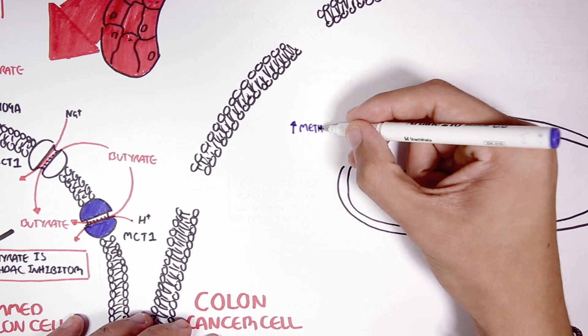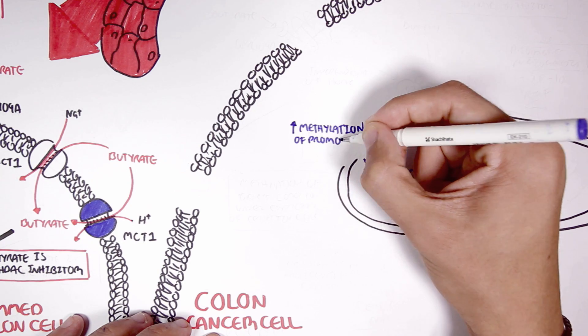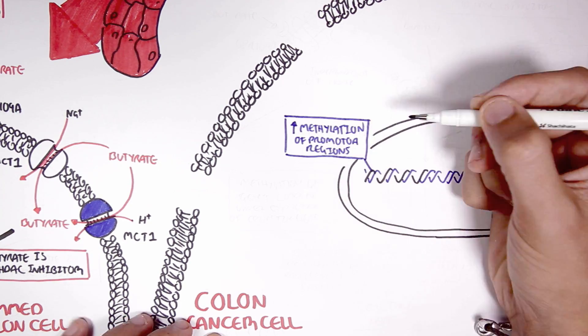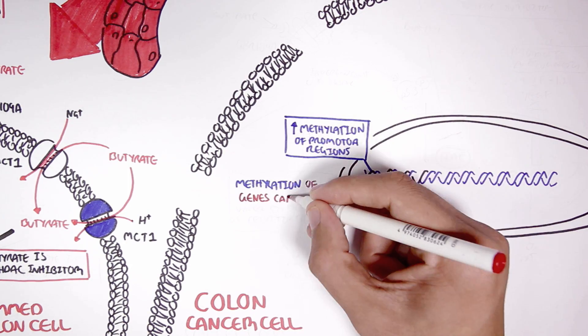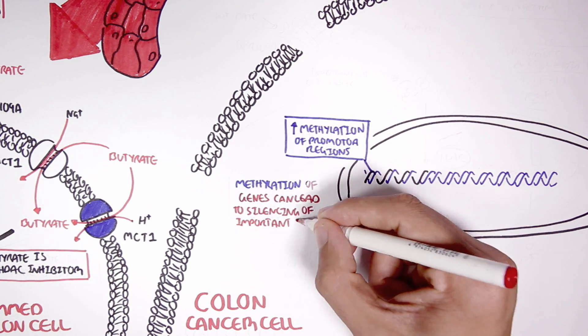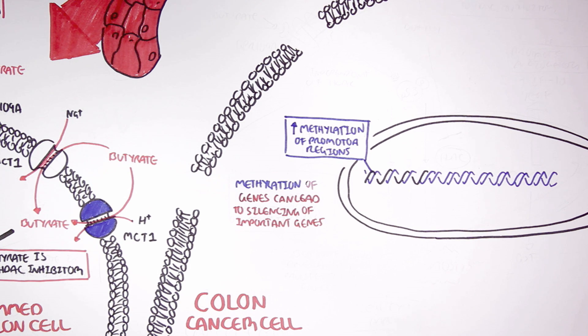Now, within a colon cancer cell, there may be hypermethylation in the DNA, specifically an increase in methylation on promoter regions, which are regions that initiate transcription. Methylation of genes can lead to silencing of important genes, genes that otherwise would control the cell cycle and apoptosis, for example.